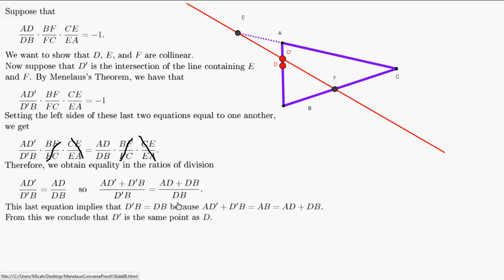So D'B equals DB. Again, thinking about these as directed line segments: if you go the same direction and length to get from D' to B as from D to B, you must be in the same place to start. Therefore, D' must be exactly the same point as D.